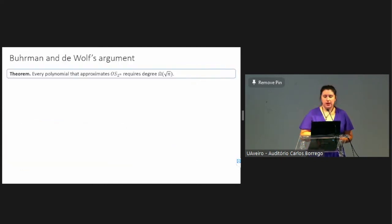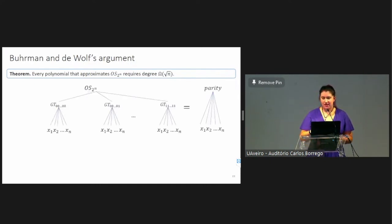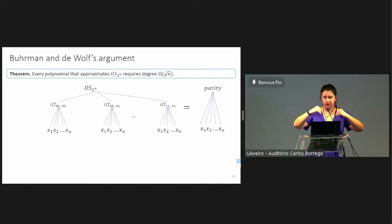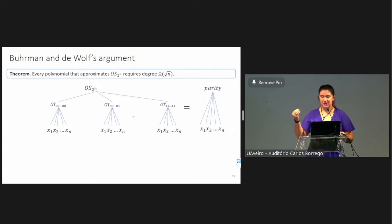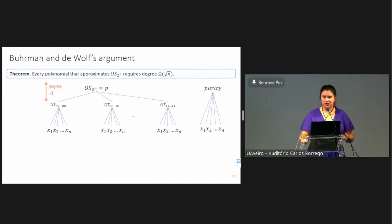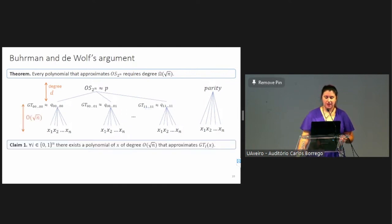To start, we're going to overview the argument by Berman and DeWolfs, who have shown the lower bound of square root of n for the approximate degree. By the definition of ordered search, ordered search composed with a bunch of functions greater-than sub n each applied to the hidden string x is going to be the same as computing parity of x. Let's say that there is a polynomial that approximates ordered search and has degree d.